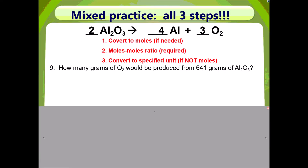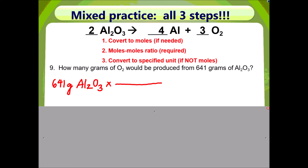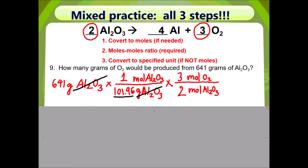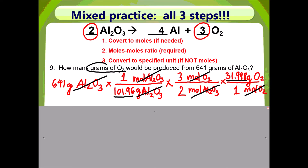Now we go to mixed practice, where all three steps are present. Question 9 asks: how many grams of oxygen would be produced from 641 grams of aluminum oxide? I have written down the given. Our given is in grams, so we need to get it to moles — get rid of grams of aluminum oxide by placing it on the bottom, getting moles on top. The numbers correspond to 1 mole equals x grams, where x is the molar mass of aluminum oxide, in this case 101.96 grams. Now that Step 1 is done, we move to Step 2: moles-to-moles ratio. Moles of aluminum oxide go on the bottom; moles of O₂ go on top. Then in Step 3, get rid of moles of oxygen on the bottom and put grams of oxygen on top. 31.998 is the molar mass of oxygen. The final answer is 302 grams of oxygen.